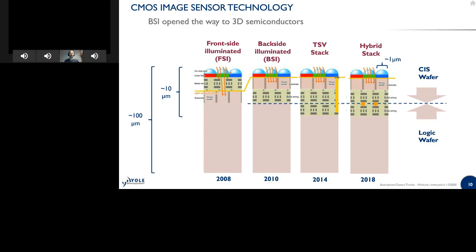Now let's look at the underlying technology trend powering the industry. First, a small discussion on the image sensor. CMOS image sensors have transitioned from front-side illuminated to back-side illumination, and then more recently from stacked TSV — through silicon vias — to do the connection between the top and lower wafer, and then more recently to hybrid stacking. What makes it very special in terms of technology is the color filter array and the microlens array on top. Those are organic elements, and the next presenter from BENEC will explain how to apply anti-reflective coatings on top of those microlenses.